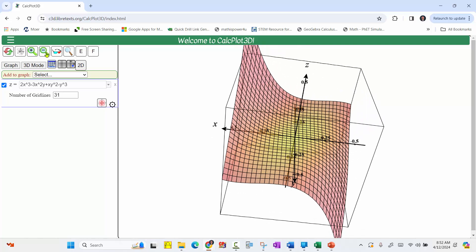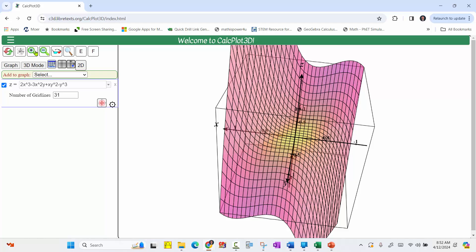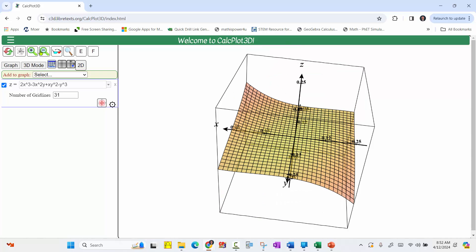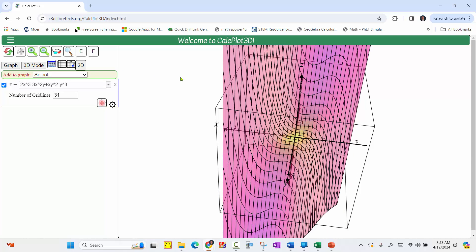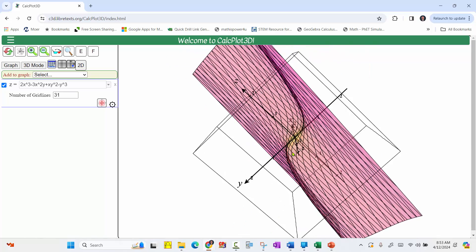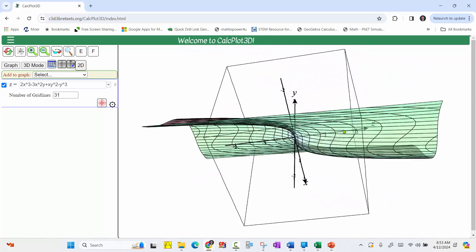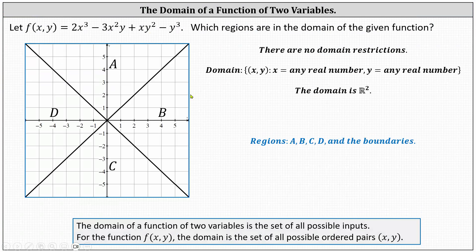Of course, we can zoom in and zoom out as we wish, and we won't find any holes, breaks, or vertical asymptotes. I hope you found this helpful.